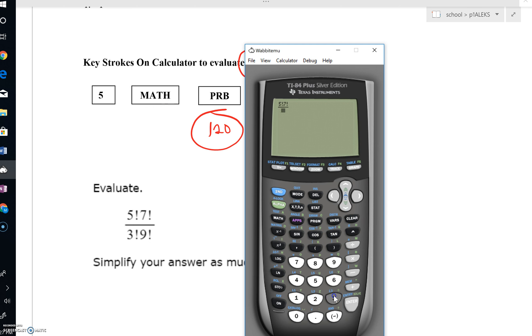Come down here, we'll have a three, math, and again, click over to PRB. Get that factorial. One more step, we'll have a nine, math, and bring this down here.